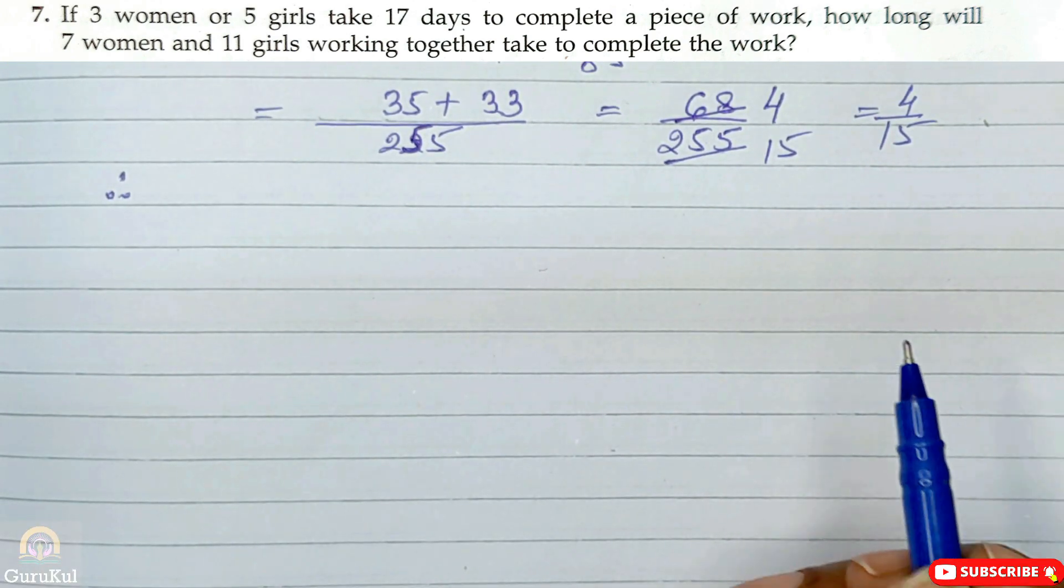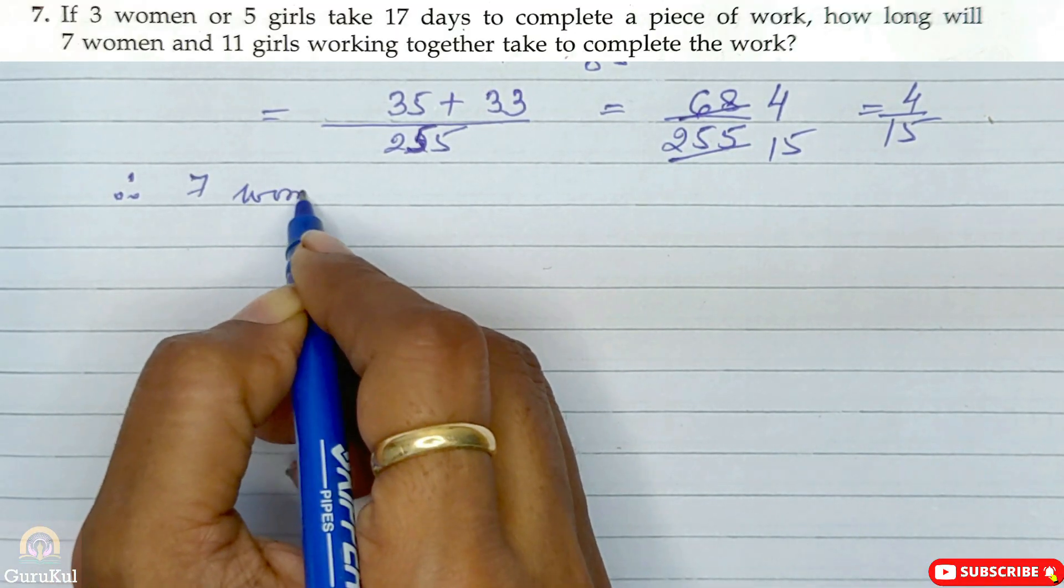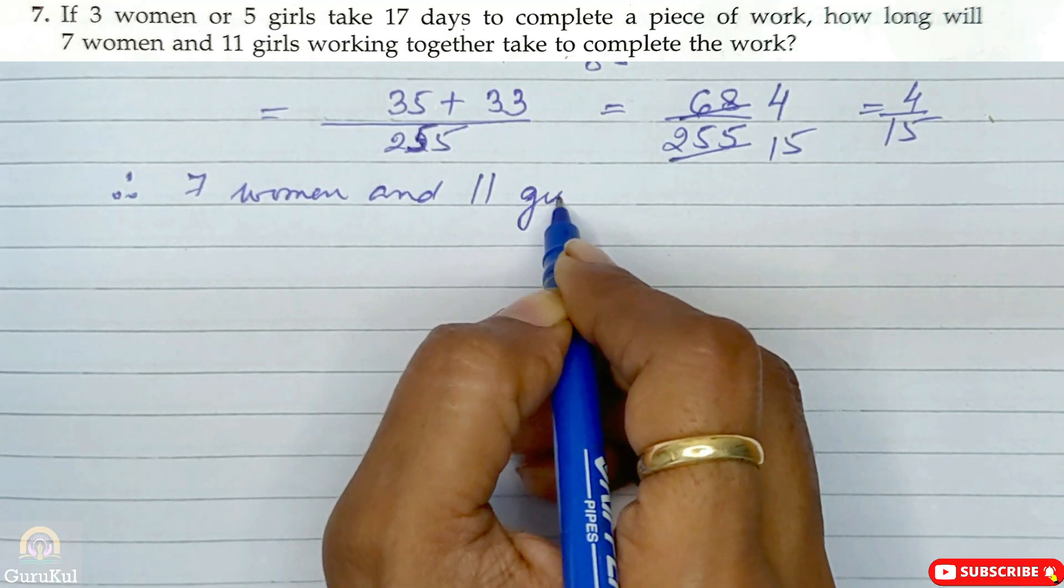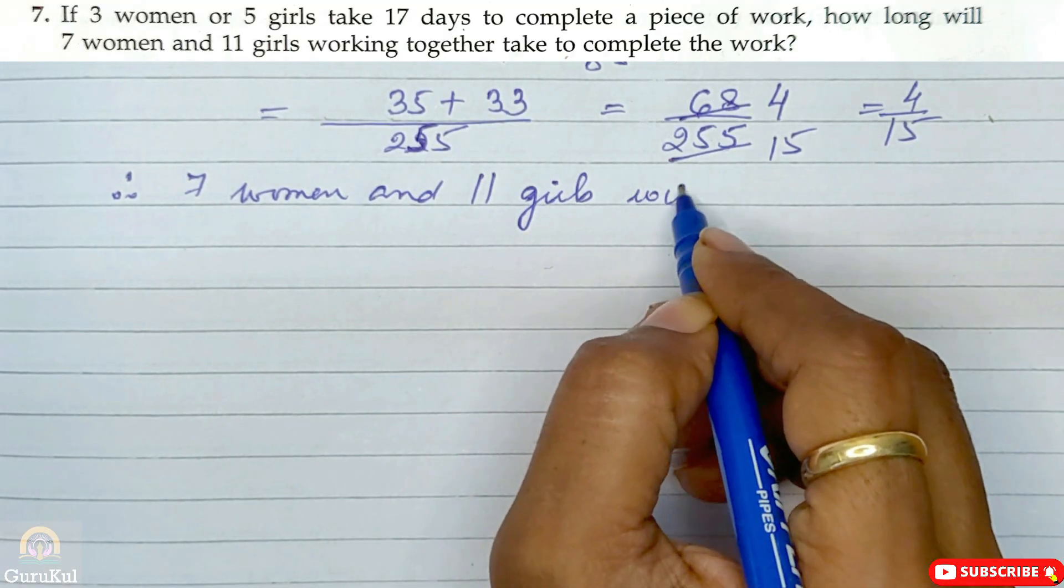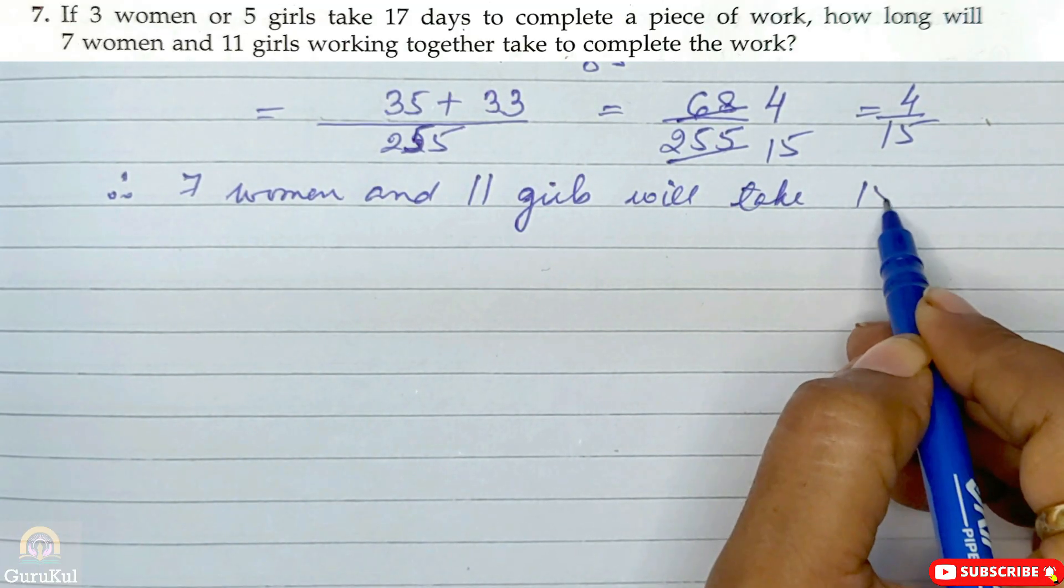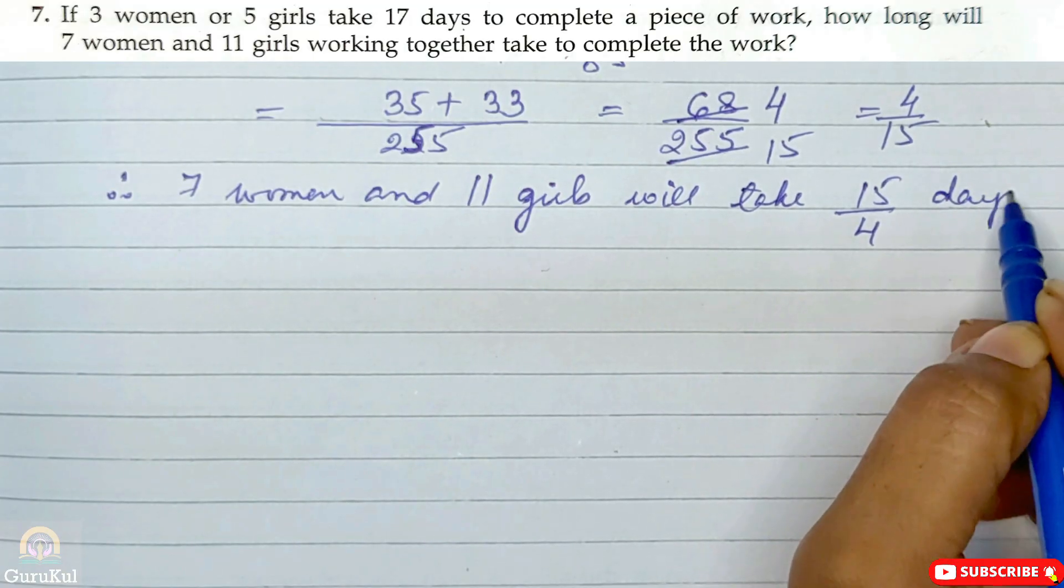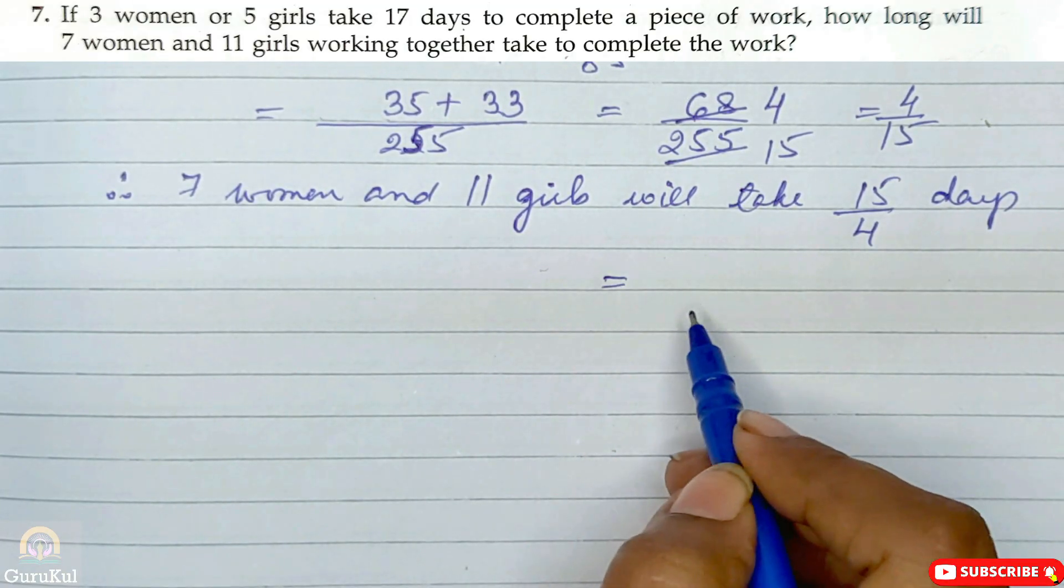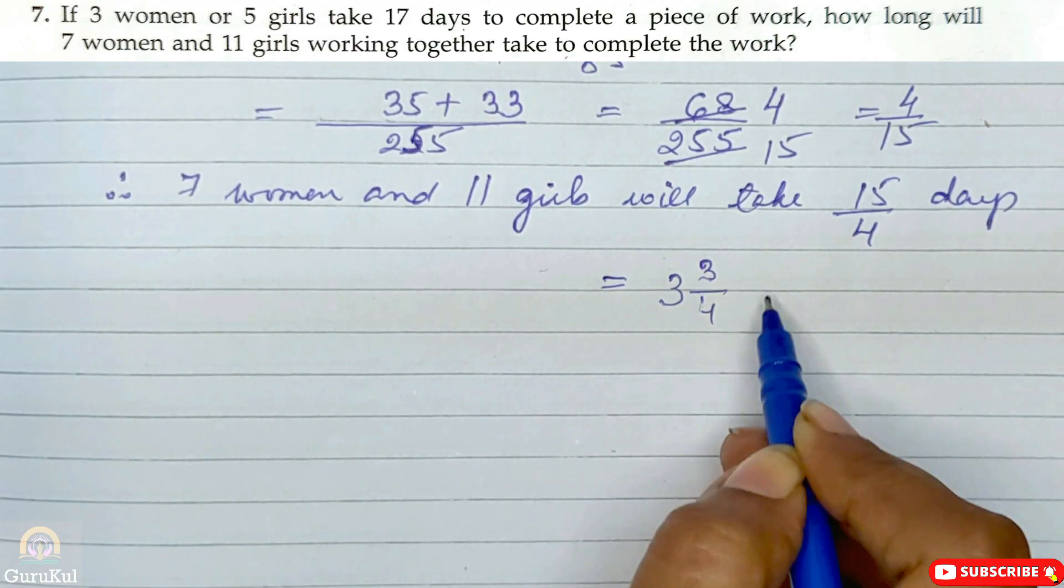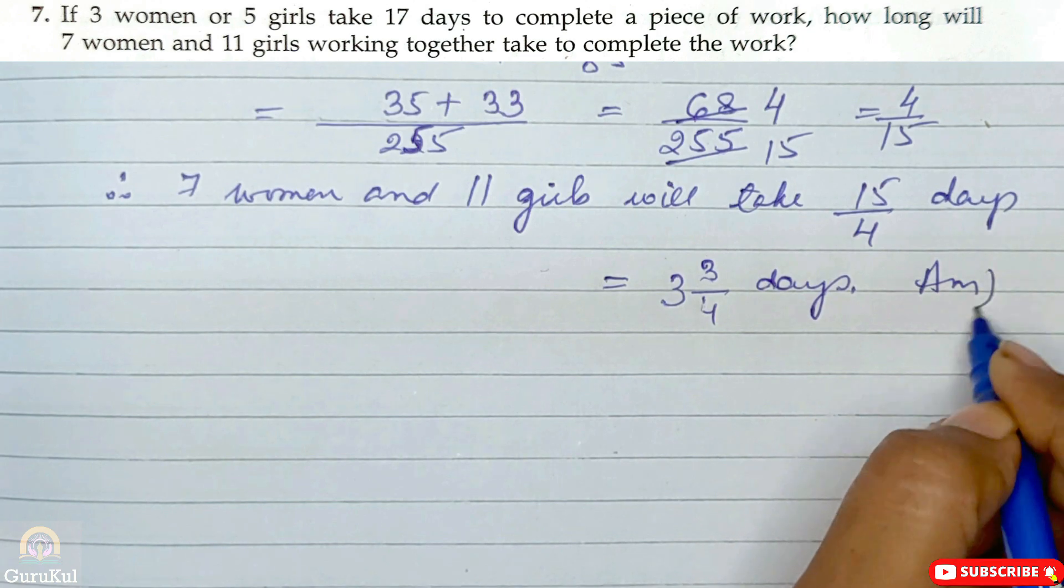Therefore seven women and eleven girls will take the reciprocal, 15 by 4 days. In mixed form this is 3 and 3 by 4 days to complete the work. And this is the answer.